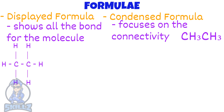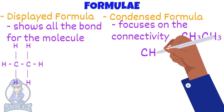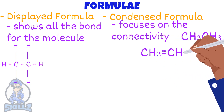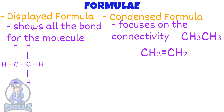So let's say that there is a double bond between two carbon atoms — here's how you would show it. Displayed and condensed formula would also be referred to as a structural formula.